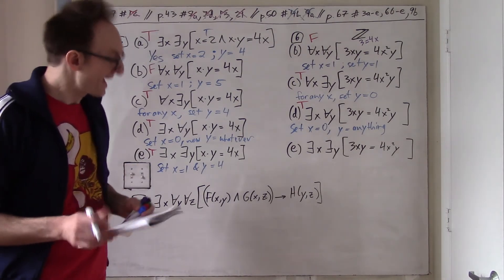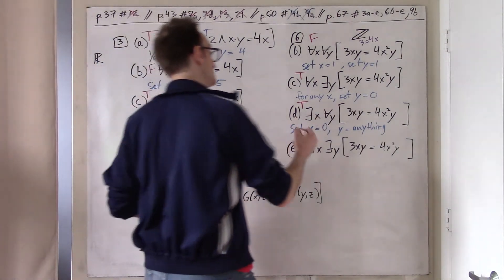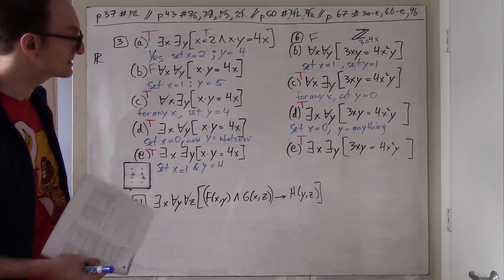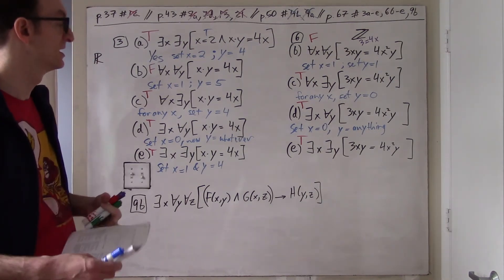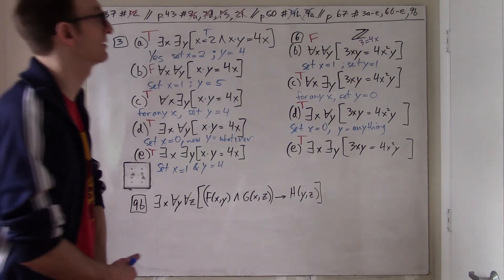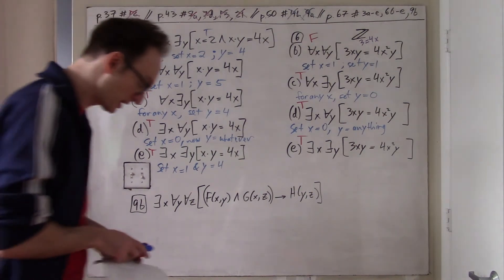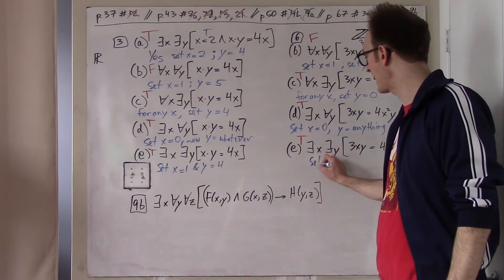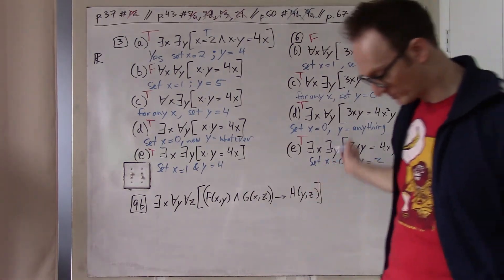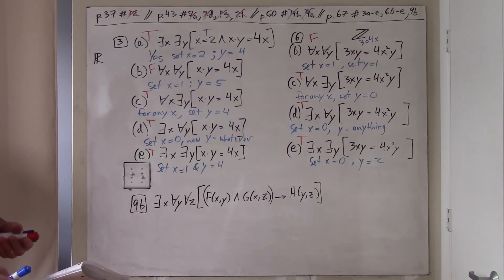Part E (integers): Does there exist a pair X, Y such that 3XY = 4X? Yes, absolutely. Either X or Y must be zero, because if neither is zero, you'd need 3Y = 4, which can't be true for integers. Set X = 0 — then Y can be anything. All you need is one example, so this is true.